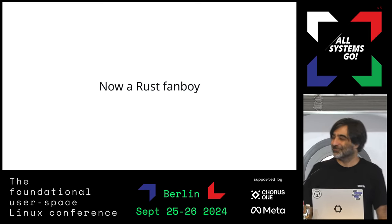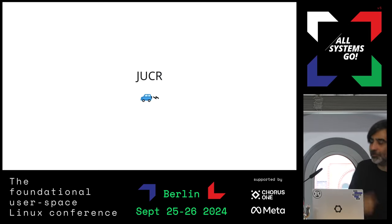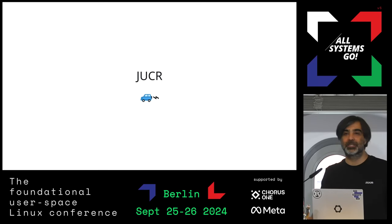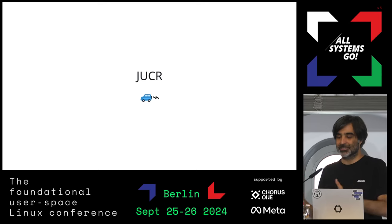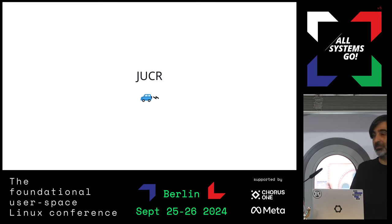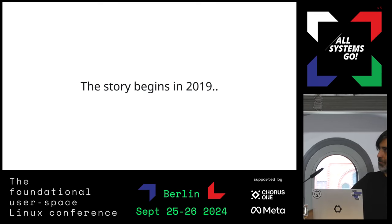I work for a company called Juicer, a small company in Berlin that does EV charging stations — end-to-end charging solutions. The charging station side is what I'm working on with my team, and all of our code is in Rust, which is pretty cool. Let's start with a story.